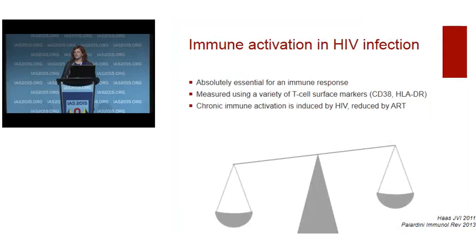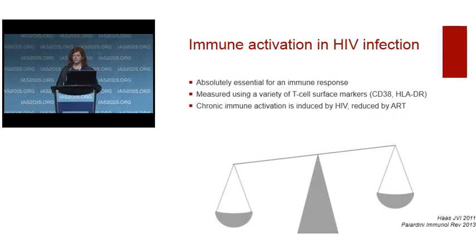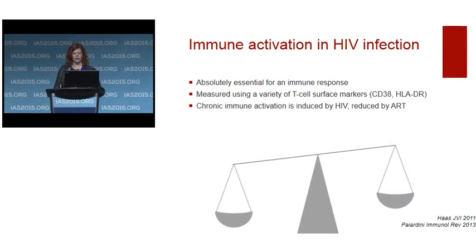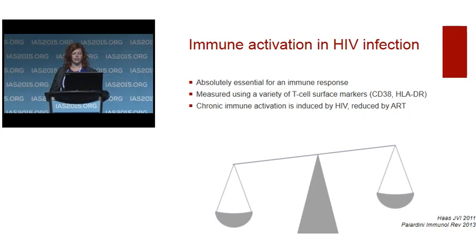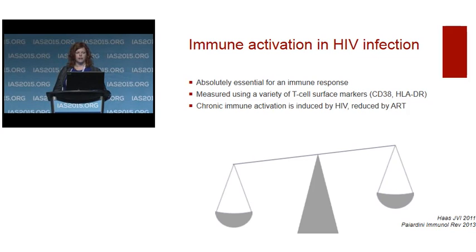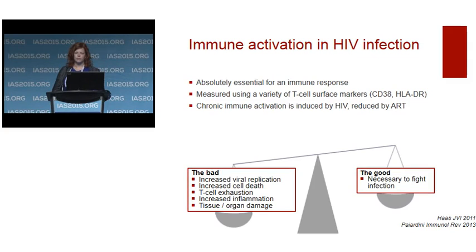Immune activation is essential to mount an immune response to infection. However, T cell activation in particular, which is measured using a variety of T cell surface markers — most commonly CD38 and HLADR — is associated with poor outcomes in HIV, increased viral replication and cell death. In most people living with HIV, chronic immune activation is detected and while it's reduced by ART, it's generally not reduced to the levels found in HIV-uninfected people.